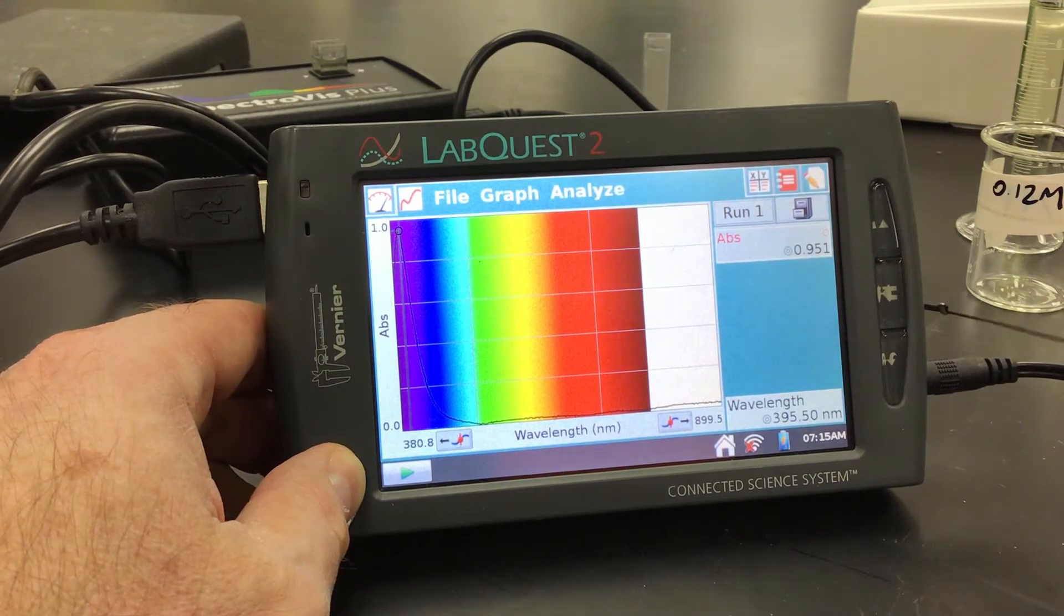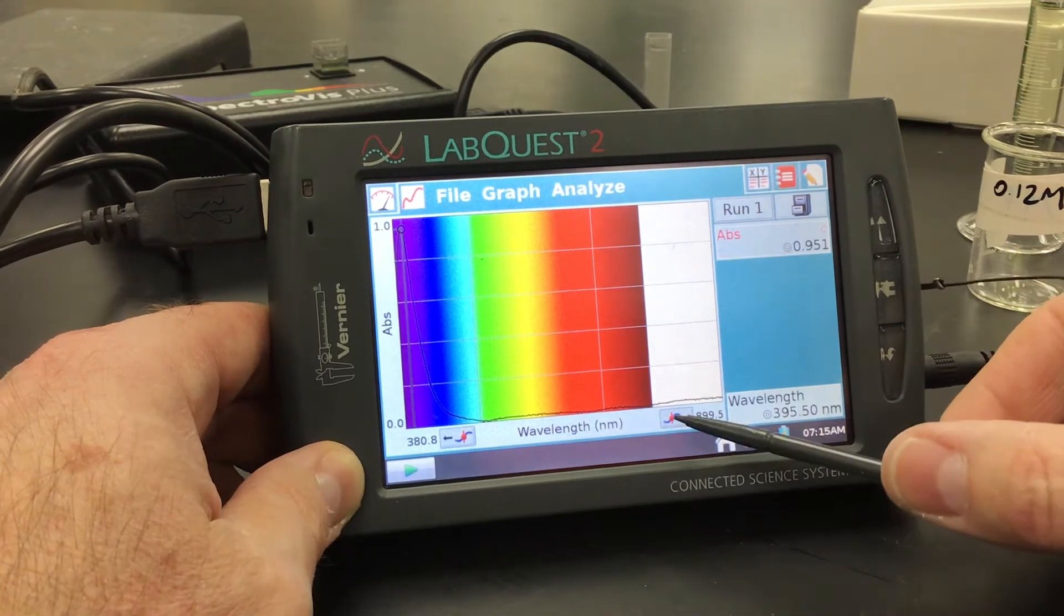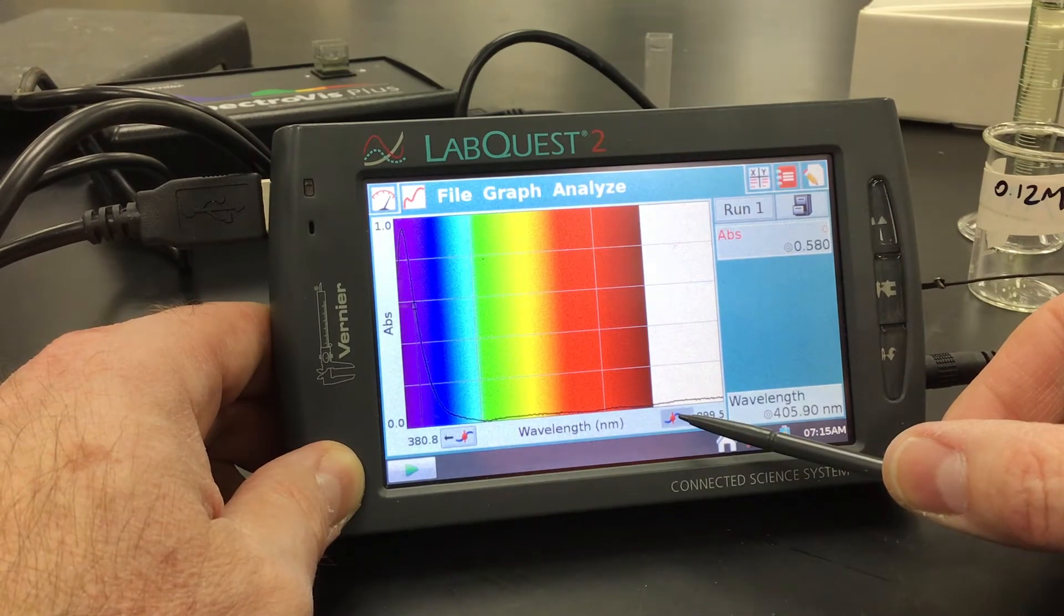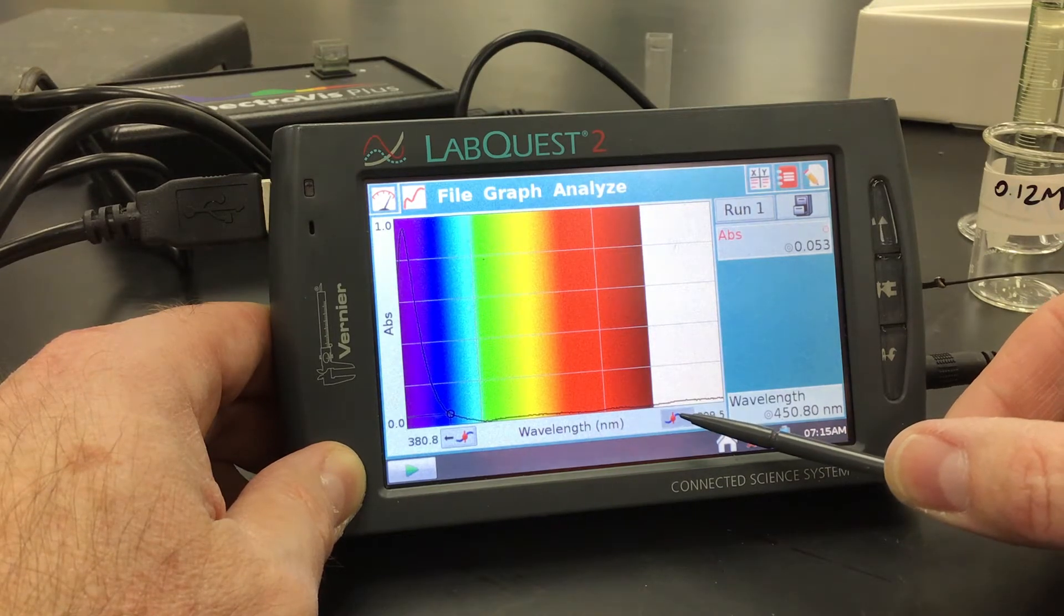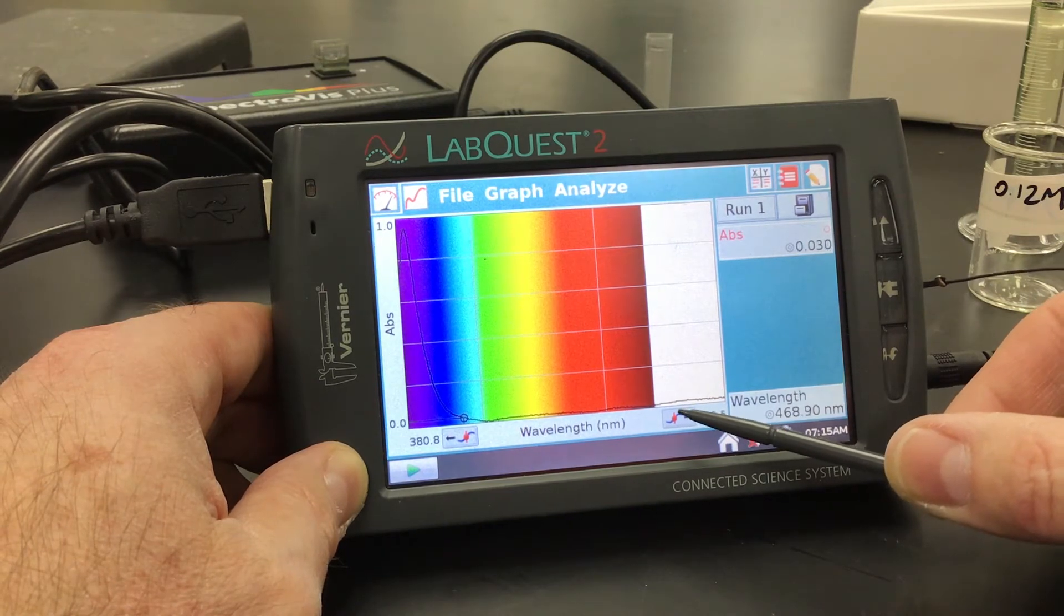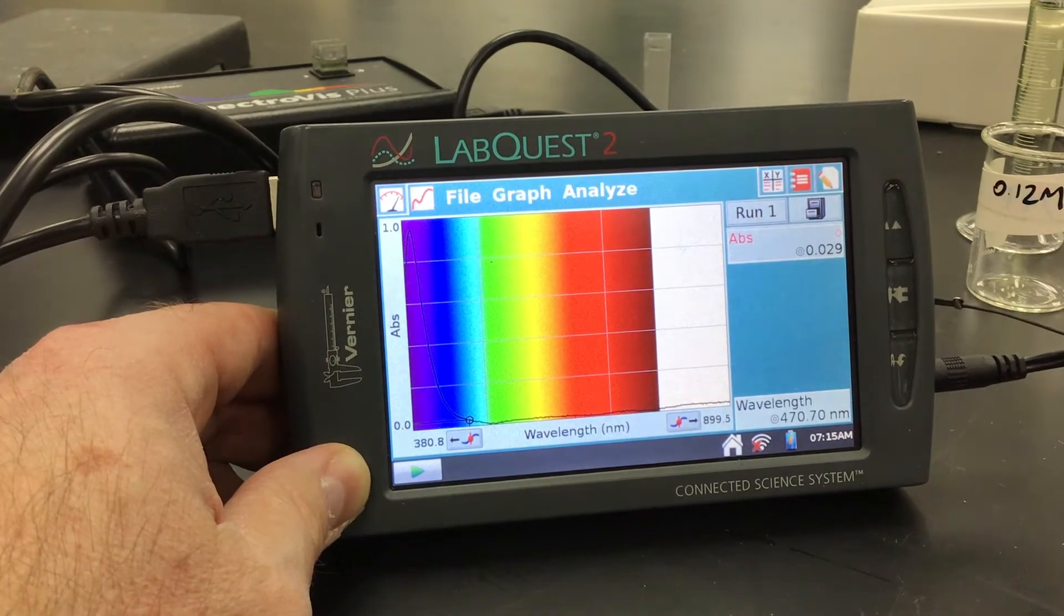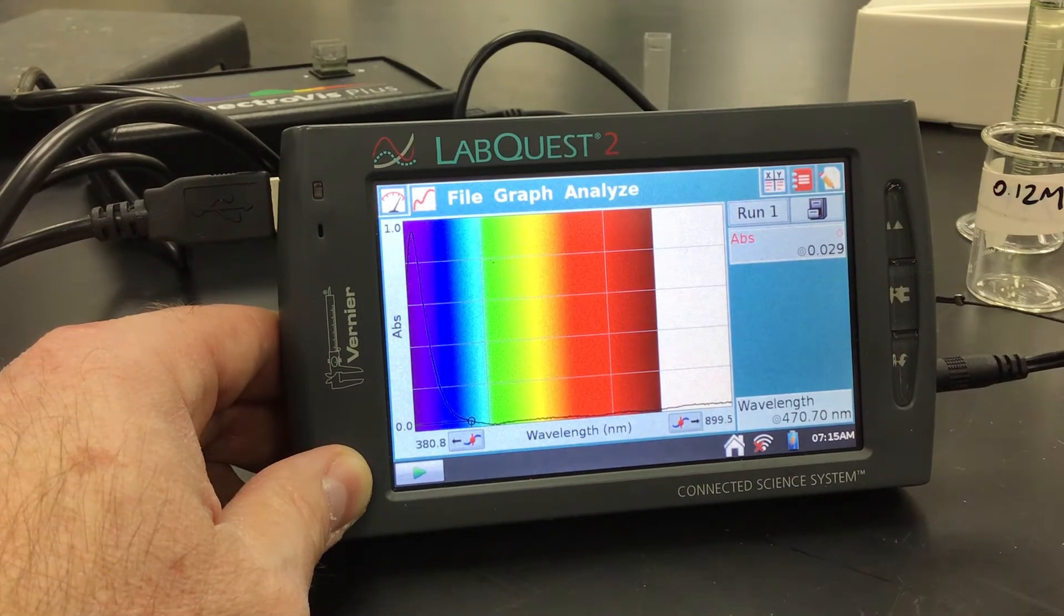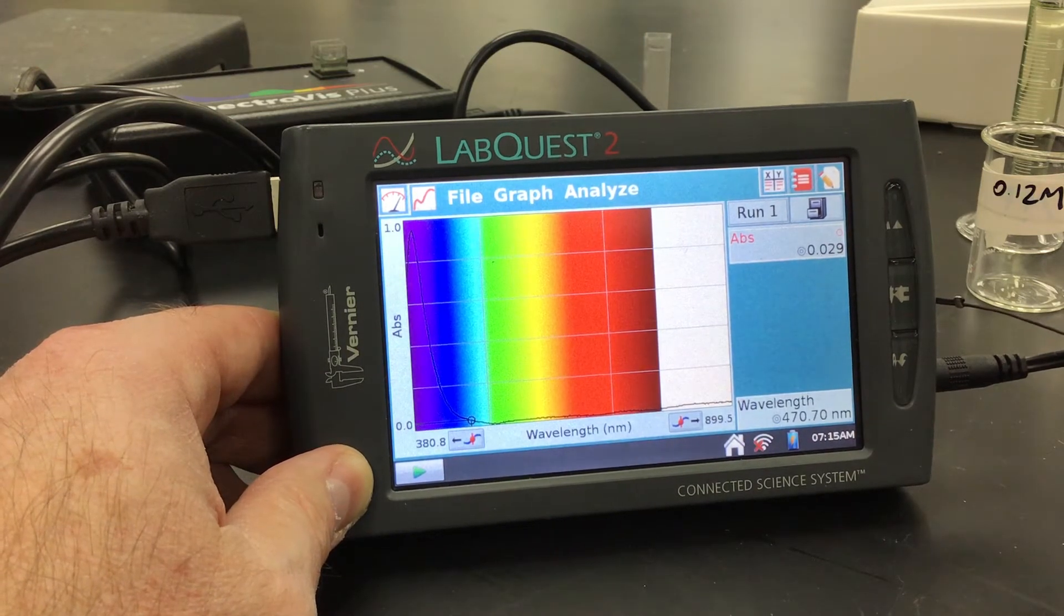Our wavelength where we're going to collect it at is going to be around 470. So I'm going to use my little toggle button to scroll over. If we didn't know this and we had to set the wavelength, we'd probably maybe do a dummy trial where we mix these together and we saw where the peak wavelength was absorbing. But our testing method says that's where we're going to be at.